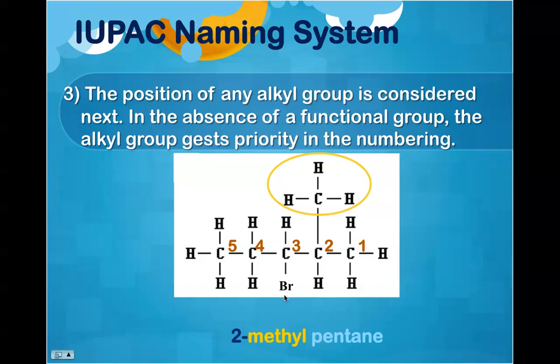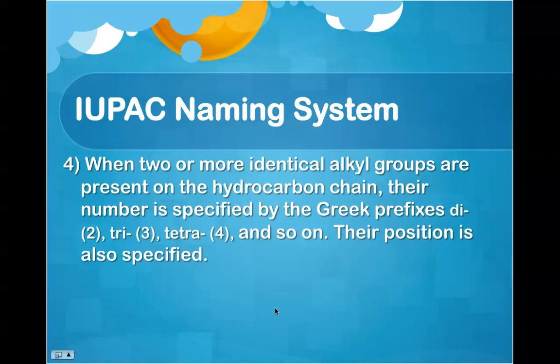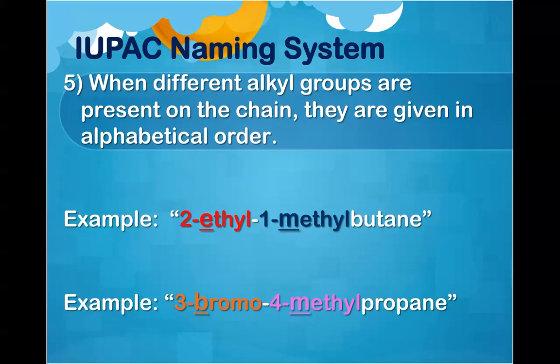We also have a bromine group that we need to label and include in our name. If we were to have more than one, we would have to use the prefixes di, tri, tetra, and so on. We will commonly use those if needed. Also, we always want to make sure that we place our different groups in alphabetical order. So if we have both an ethyl and a methyl group, we're going to put the one with the E before the one with the M.